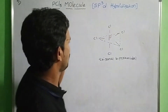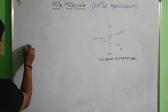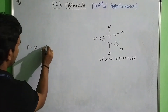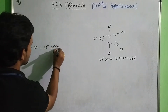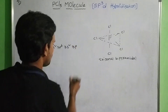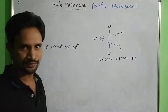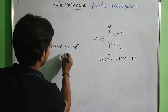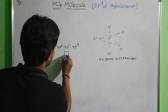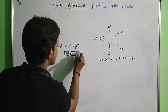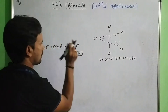Based on this structure, the atomic number of phosphorus is 15. It is written as 1s2, 2s2, 2p6, 3s2, 3p3. This is the ground state. In this state, phosphorus has only 3 unpaired electrons in the p orbital.